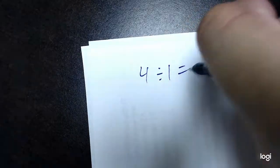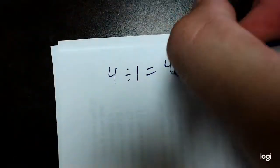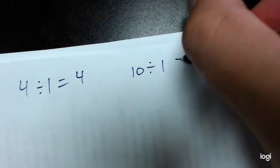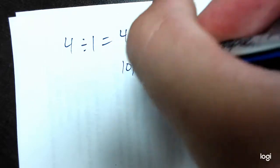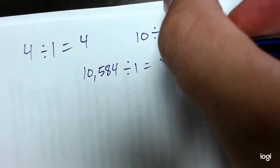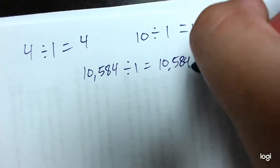Pretty much the way the rule works is that if I take the number 4 and I divide it by 1, what do I get? Well, I get the number 4. If I take the number 10 and I divide it by 1, I get the number 10. If I take the number 10,584 and I divide it by 1, I get 10,584.